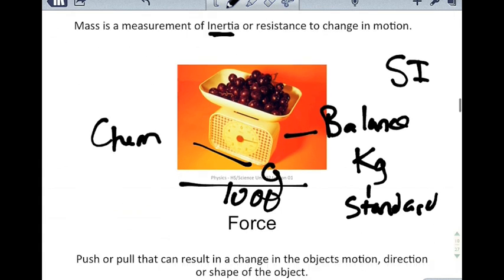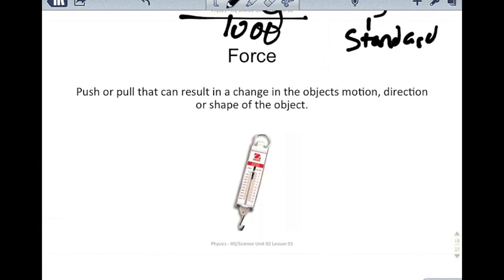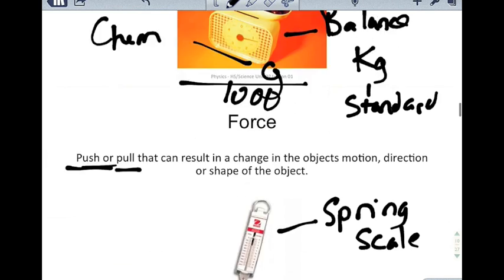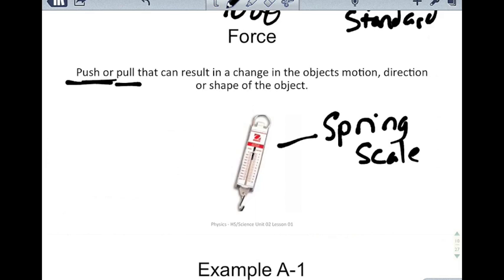Mass is very different from force. A force is a push or pull that can — but doesn't necessarily have to — result in a change in the object's motion, direction, or shape. You generally measure force with something called a spring scale. In the weight versus mass lab, you looked at what the mass was and what the weight was, and the weight was an example of a force. So weight is a force, and because of that, it's measured in the unit of the Newton.